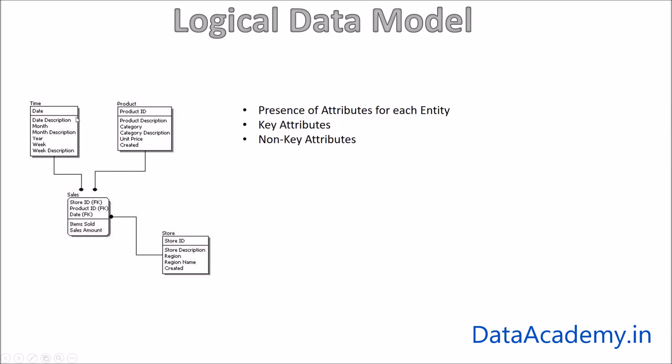So in the logical data model you draw a line within each entity. All the attributes mentioned or displayed above the line form the key attribute, and all the other attributes below the line are called non-key attributes, meaning they do not help in uniquely identifying a record.